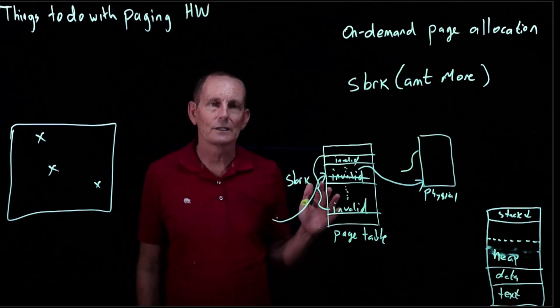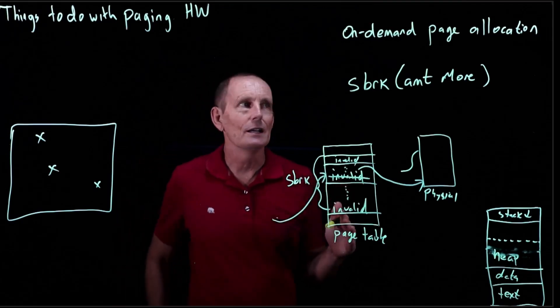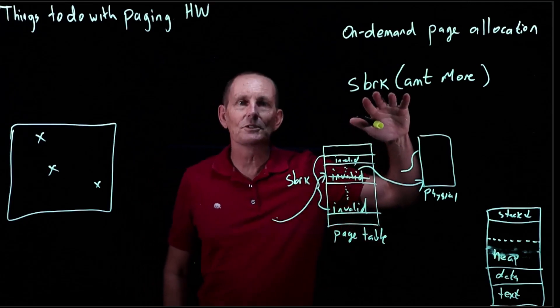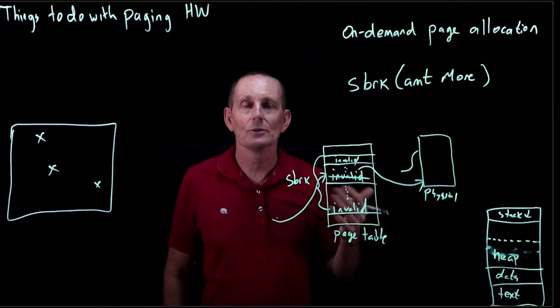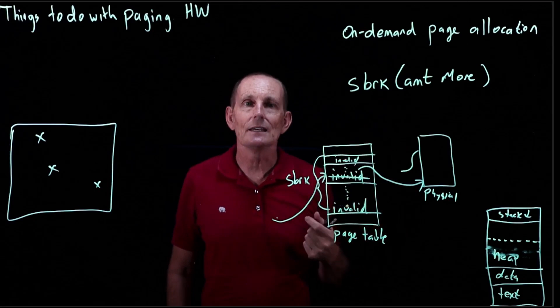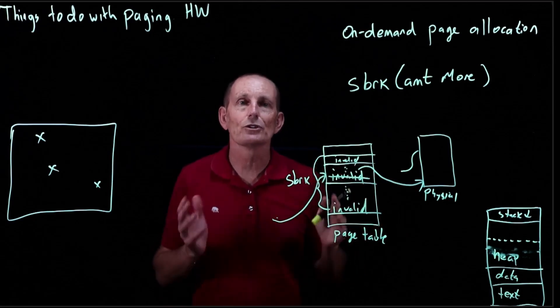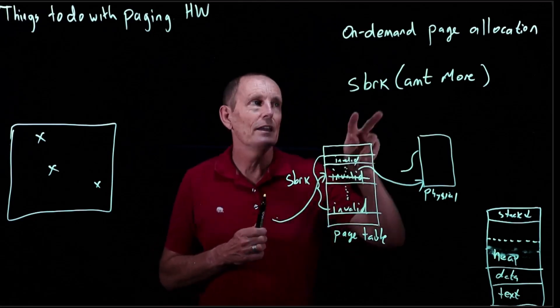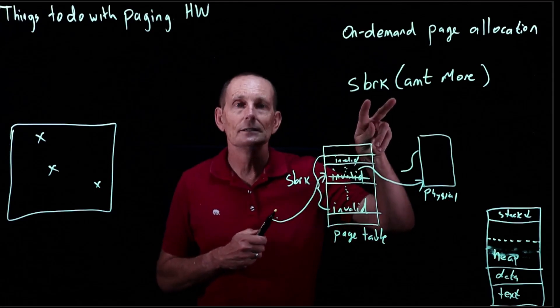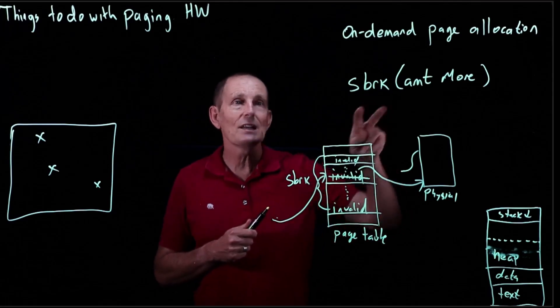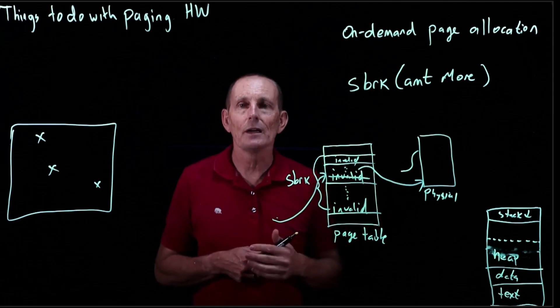The only issue one could run into is the process assumes that when the s-brake returns, the memory was actually allocated. That is, if the entire system was short of memory, then the s-brake could fail and the process could then do something about that.